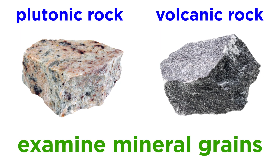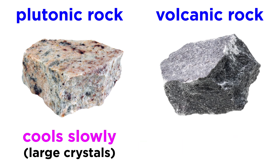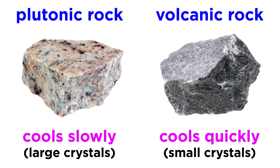It is usually pretty easy to distinguish a plutonic rock from a volcanic rock simply by analyzing the size of the mineral grains. Plutonic rocks, which cool slowly, have ample time to grow large crystals, while volcanic rocks, which crystallize rapidly, are composed of tiny grains that usually can't be seen by the naked eye.